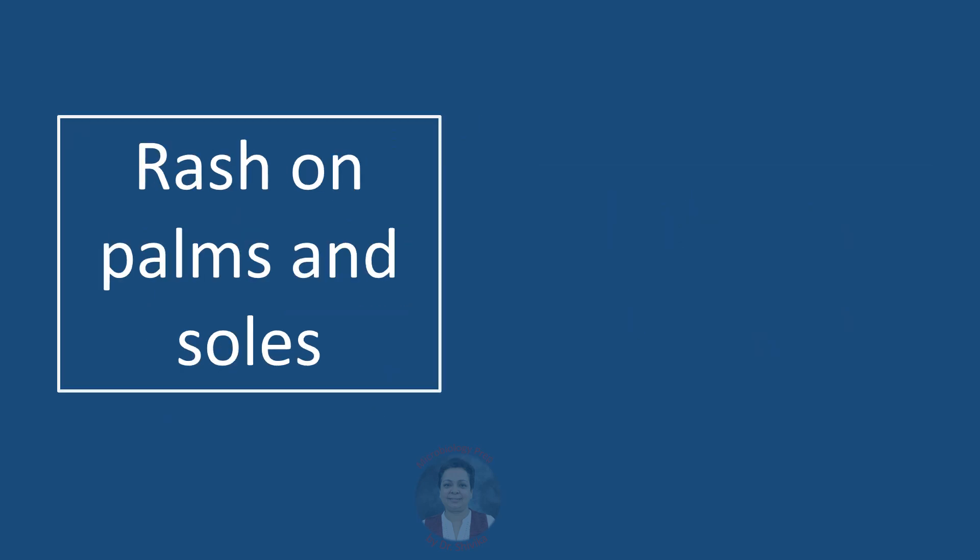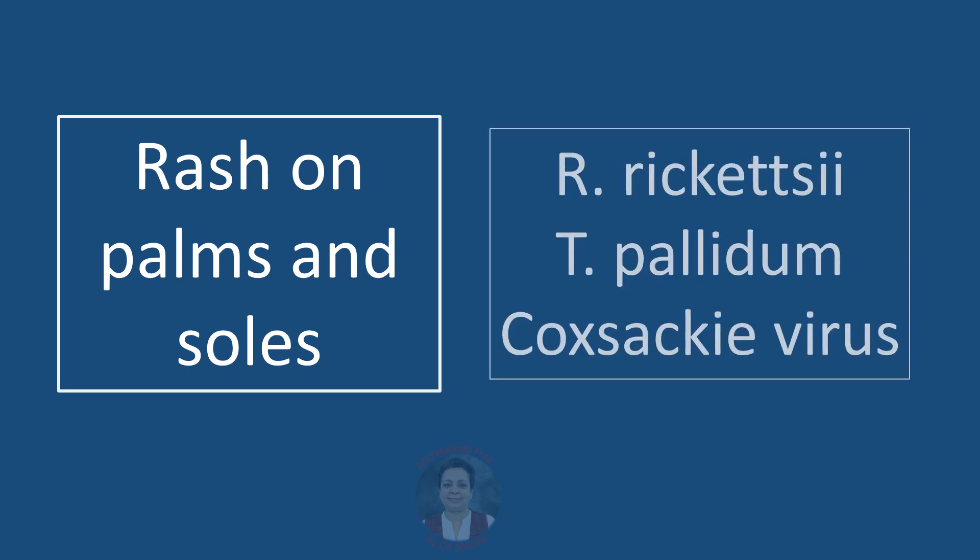A patient presenting with rash on palms and soles could be infected with Rickettsia rickettsii, which causes Rocky Mountain spotted fever; or Treponema pallidum, which causes syphilis — specifically in the secondary stage; or Coxsackie viruses, which cause hand, foot, and mouth disease.